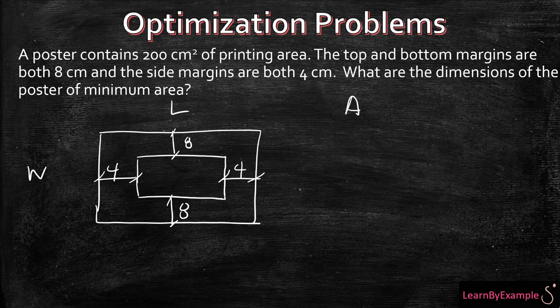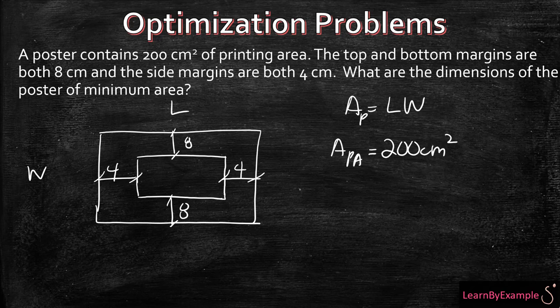So what are the dimensions of the poster of minimum area? We know that area is equal to your length times your width. That's the area of the poster, and we know the area of your printing area is going to be equal to 200 centimeters squared. So in this case you have to be careful.